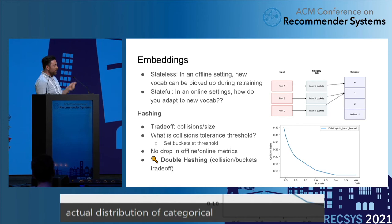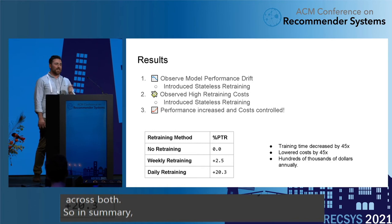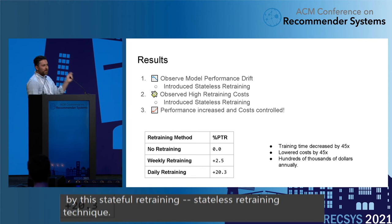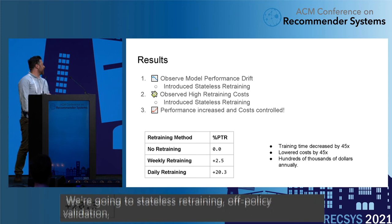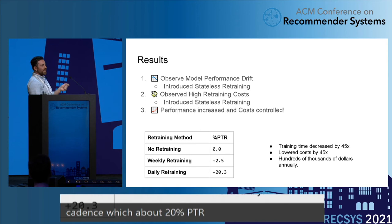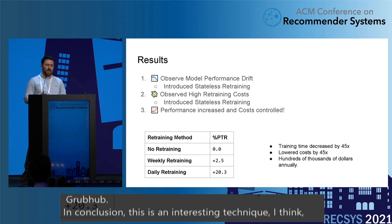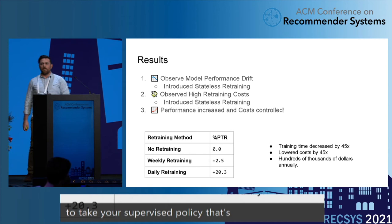In summary, we observed model drift, fixed it with stateless retraining, noticed it's very expensive, then moved to stateful incremental training with policy evaluation and progressive validation. Here's what we got for all that hard work: a 20% purchase-through rate increase over our baseline with daily cadence, and more importantly, training costs decreased by 45 times, which lowered total public cloud costs by 45x — materially hundreds of thousands of dollars per year for Grubhub. This is an interesting technique to take a supervised policy trained offline and bring it online using a fine-tuning and pre-training analogy.